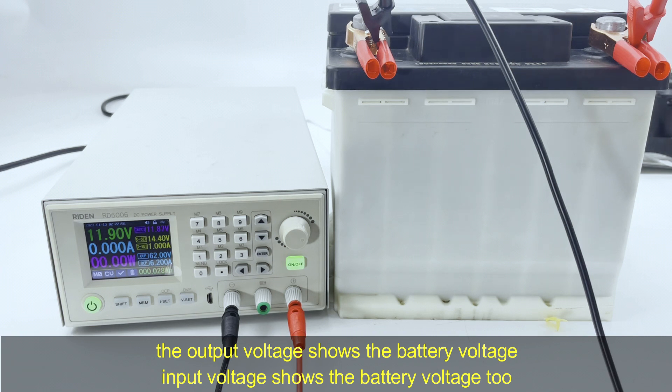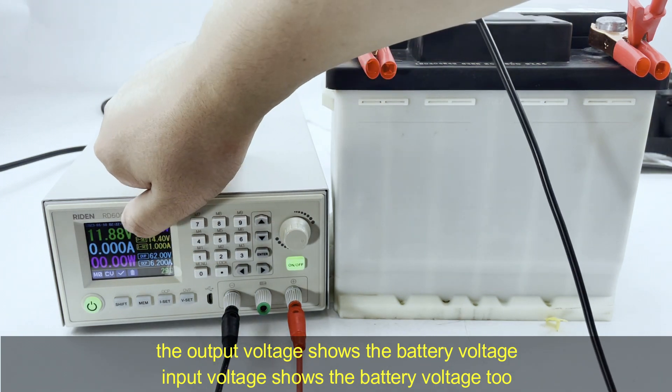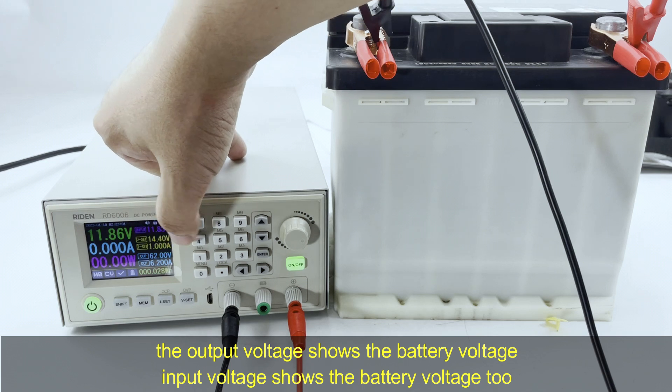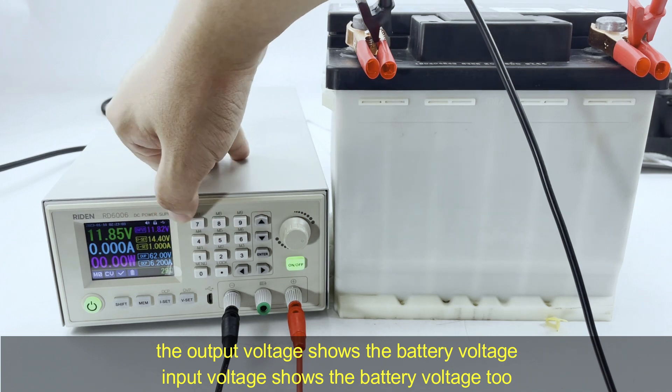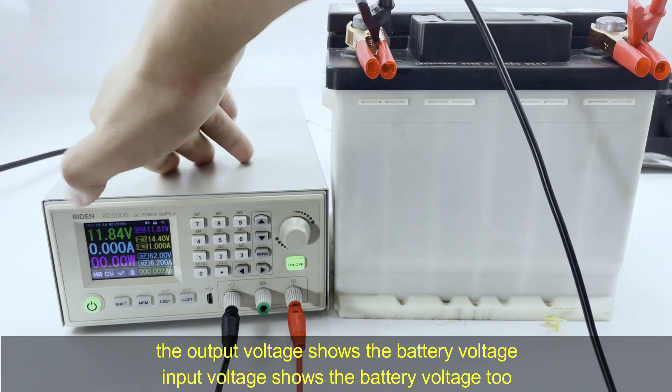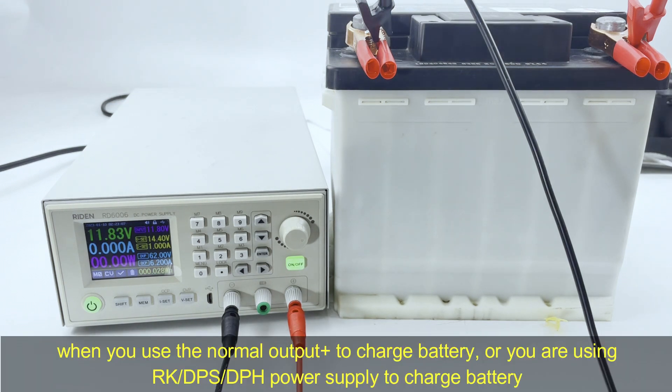The output voltage, you can see here. The output voltage is the battery voltage. And the input voltage is still the battery voltage. So if you are using the normal output positive terminal of RD series power supply, or you are using other DPS, DPH,